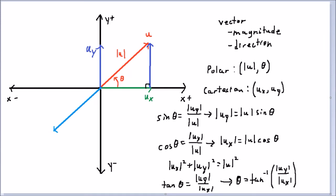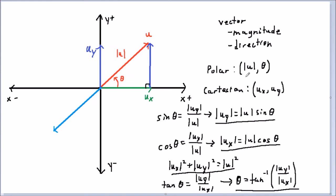Here are our final equations: magnitude u sub y equals magnitude u times sine of theta; magnitude u sub x equals magnitude u times cosine of theta; u sub x squared plus u sub y squared equals u squared; and theta equals the arctangent of u sub y over u sub x. In the next video, we'll look at various operations we can perform on these vectors.